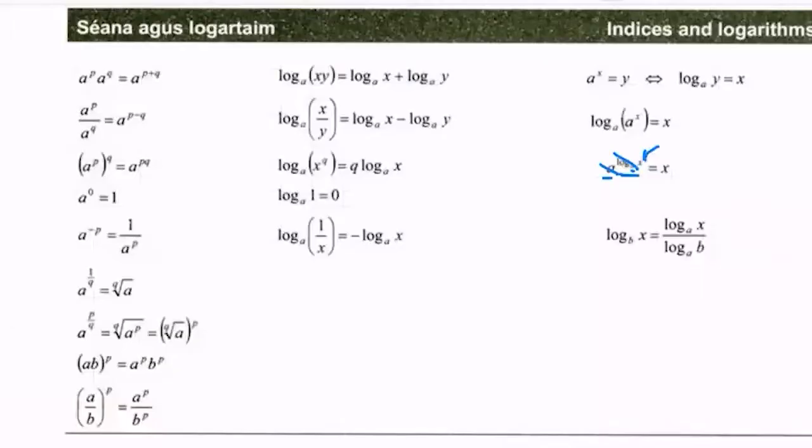So what am I doing there? I'm using this rule of indices. I can write that as (3²)^n, or I could have written it as (3^n)².